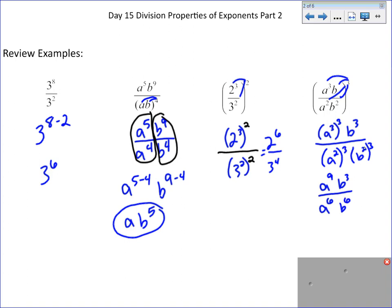Because again, 2 times 3 is 6. And now we can use what we learned over here to simplify each one of these. We get a to the 9 minus 6, b to the 3 minus 6. We get a to the 3rd, b to the negative 3rd.